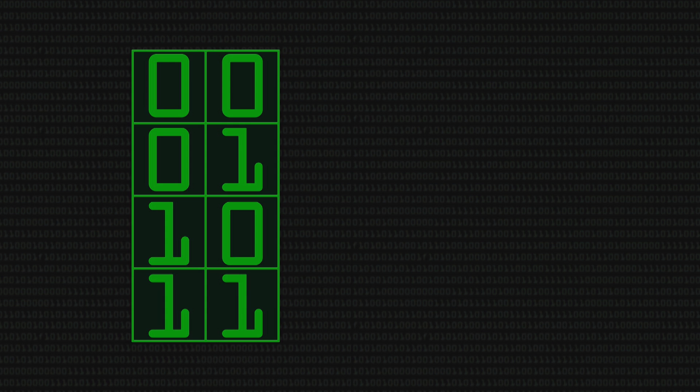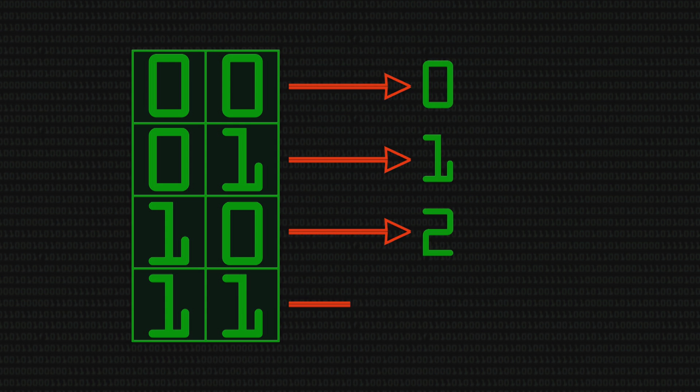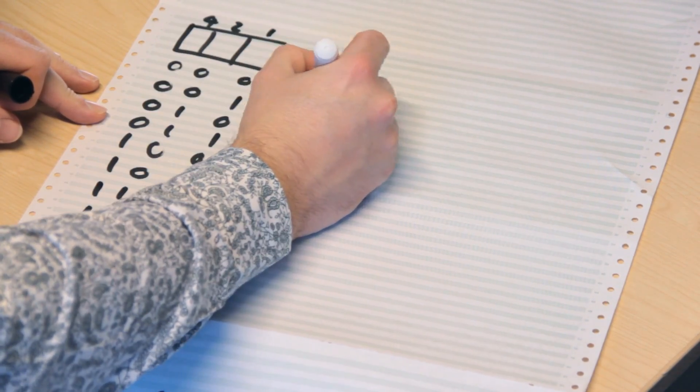So we can store four possible values from zero through to three. If we do the same with three bits, we get zero, one, two, three, four, five, six, and seven.